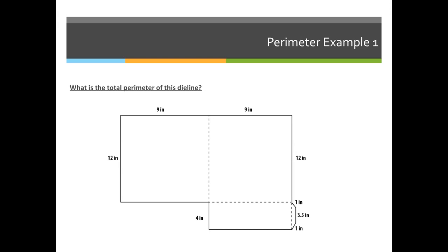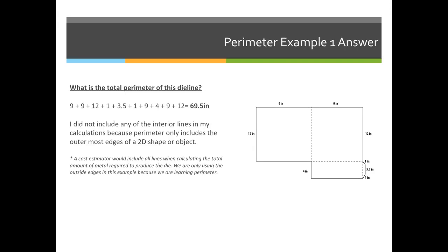So if we're creating this pocket folder, and we wanted to try to figure out how much it should cost to make this die, you first need to calculate the perimeter of the shape. In this case it would be 9 plus 9, going around the outside, plus 12, plus 1, plus 3.5, plus 1,